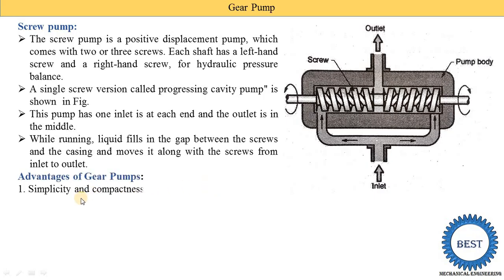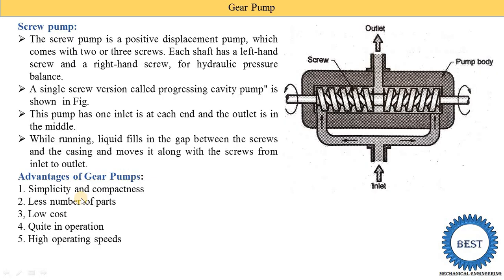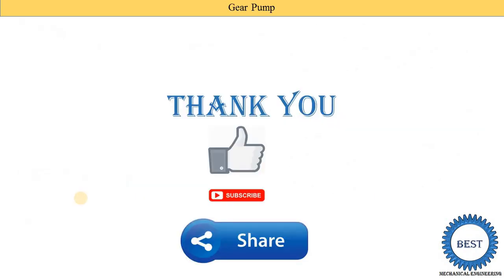The advantages of gear pumps include: simplicity and compactness — they are small in size with fewer parts, so maintenance is less. The cost is low. They are quiet in operation — not much noise. They have high operating speeds and are less sensitive to contamination. Gear pumps are also reversible — we can rotate the gear pump in reverse direction.